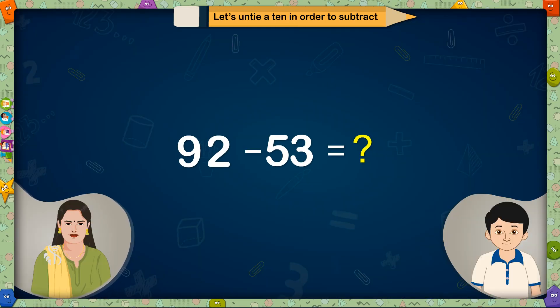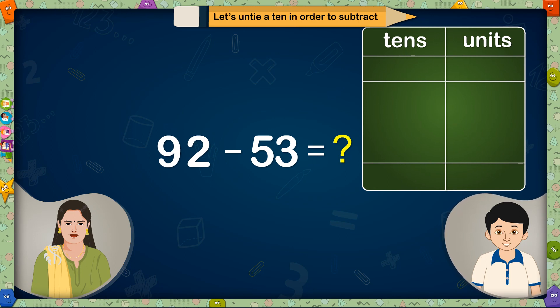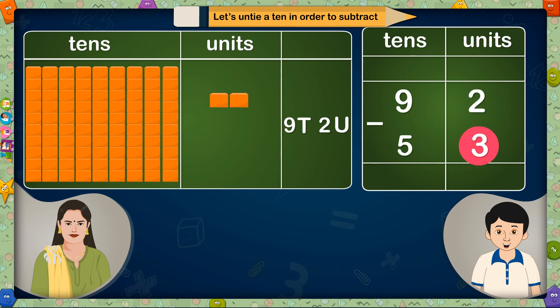92-53 is equal to? Madam, first write the sum in vertical columns of tens and units. From 92, write 2 in units place and 9 in tens place. Put a minus sign in between. From the next number 53, write 3 in units place and 5 in tens place. We cannot reduce 3 units from 2 units.